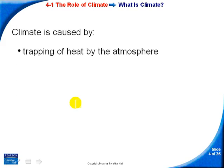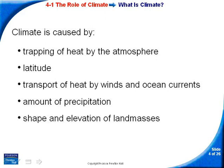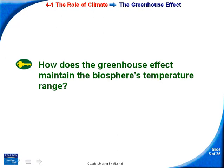What causes climate? It's caused by the trapping of heat by the atmosphere, latitude, transport of heat by winds and ocean currents, amount of precipitation, and the shape and elevation of land masses. We'll cover some of these in more detail in a moment.